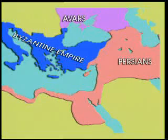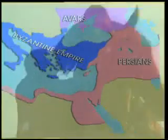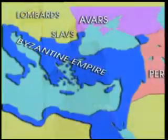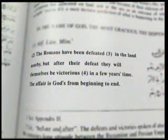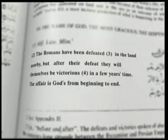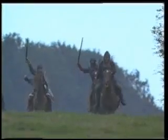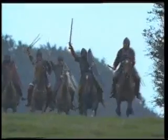Many governors had revolted against Emperor Heraclius, and the empire was on the point of collapse. Mesopotamia, Cilicia, Syria, Palestine, Egypt and Armenia, which earlier belonged to Byzantium, were invaded by the idolater Persians. In short, everyone was expecting the Byzantine Empire to be destroyed.